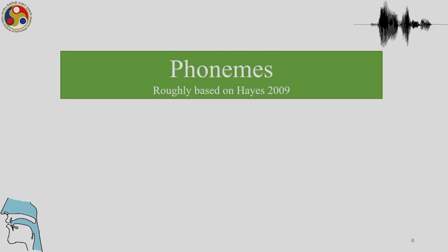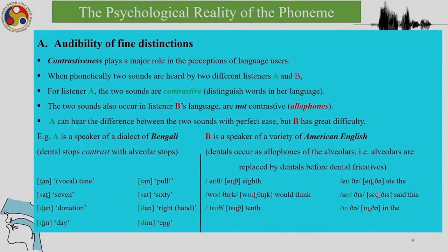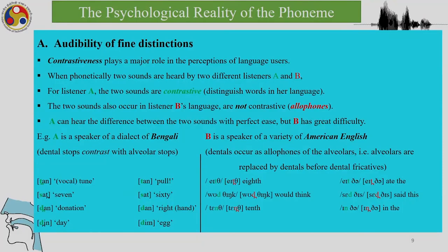Let us now look at phonemes, which we looked at in the last lecture and are continuing with. We talked about the psychological reality of the phoneme and about contrastiveness — how a contrast that is phonemic in one language may be allophonic in another. For example, English has dental fricatives but not dental stops, whereas a dialect of Bengali may have both dental and alveolar stops.